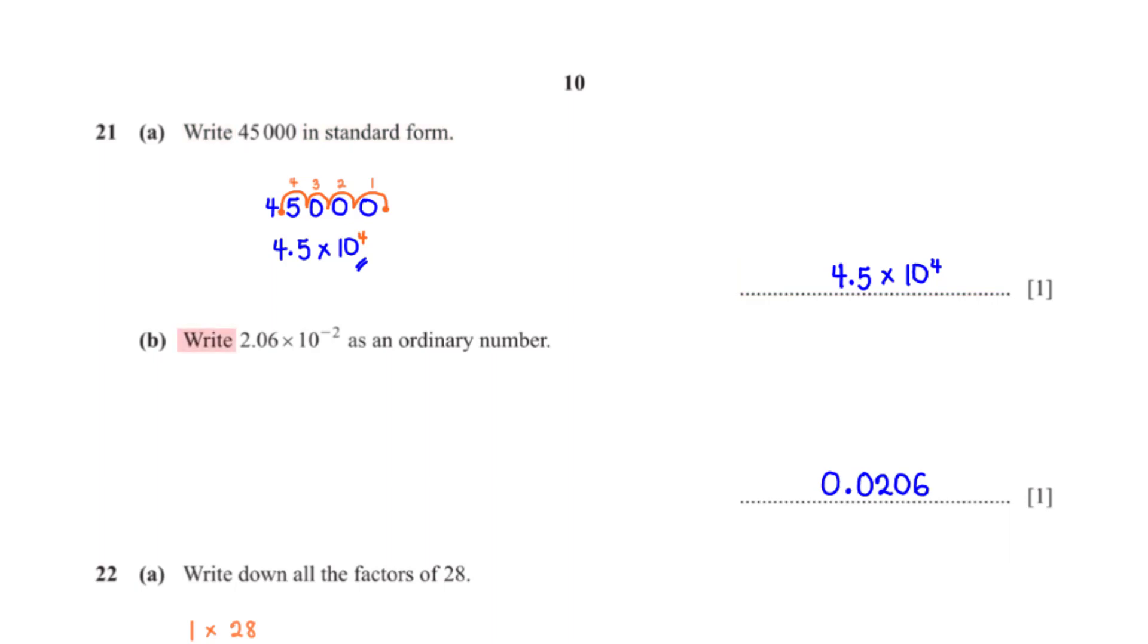Write 2.06 times 10 raised to the power negative 2 as an ordinary number. When we type 2.06 times 10 raised to the power negative 2 into the calculator, we get its ordinary form to be 0.0206.